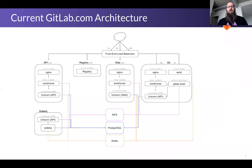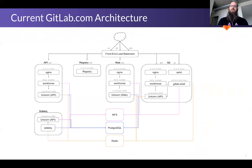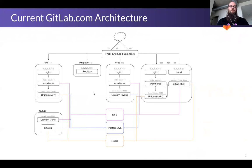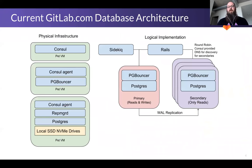Starting with our architecture: GitLab.com uses a series of front-end HAProxy load balancers. We split the traffic that comes into those — we have a series of hosts that cover our API, our registry for Docker images, our web for the UI front-end, and our Git for Git interactions, whether HTTP or SSH-based. These are all the components you'd find inside your Omnibus installation — we just break them out.